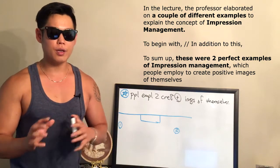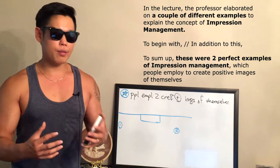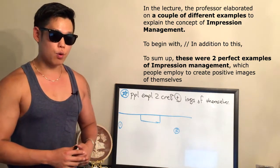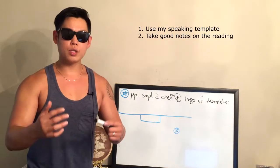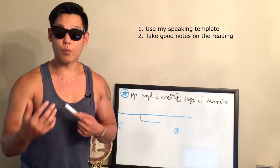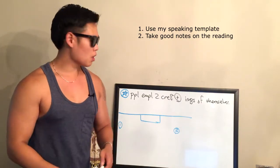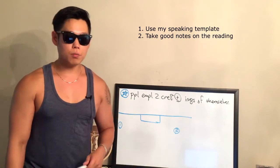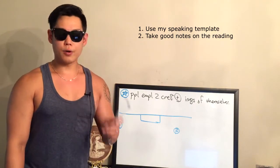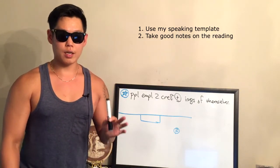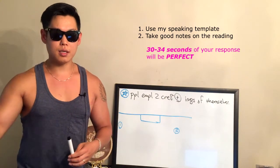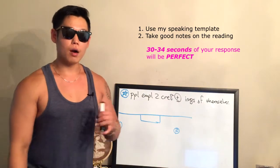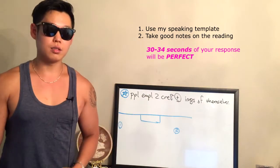That was a little more than 30 seconds — around 33 to 34 seconds. So for every Task 4 question, as long as you're using my speaking template correctly without any awkward moments, once you're done reading the passage and taking notes, you should be able to fill about 33 to 35 seconds of the 60-second speaking time without any problems. Now let's listen to the lecture.